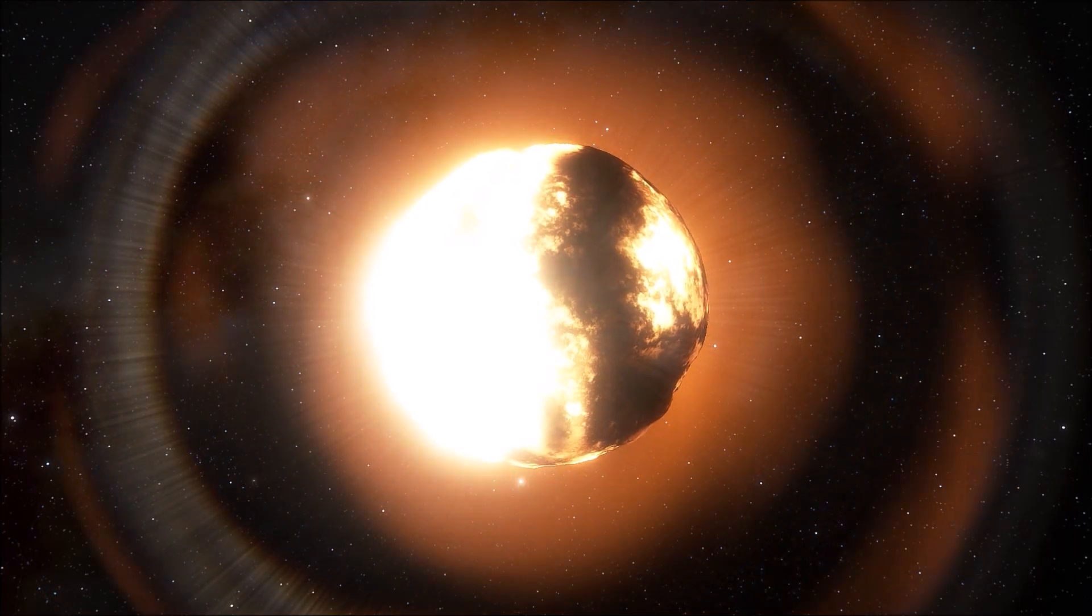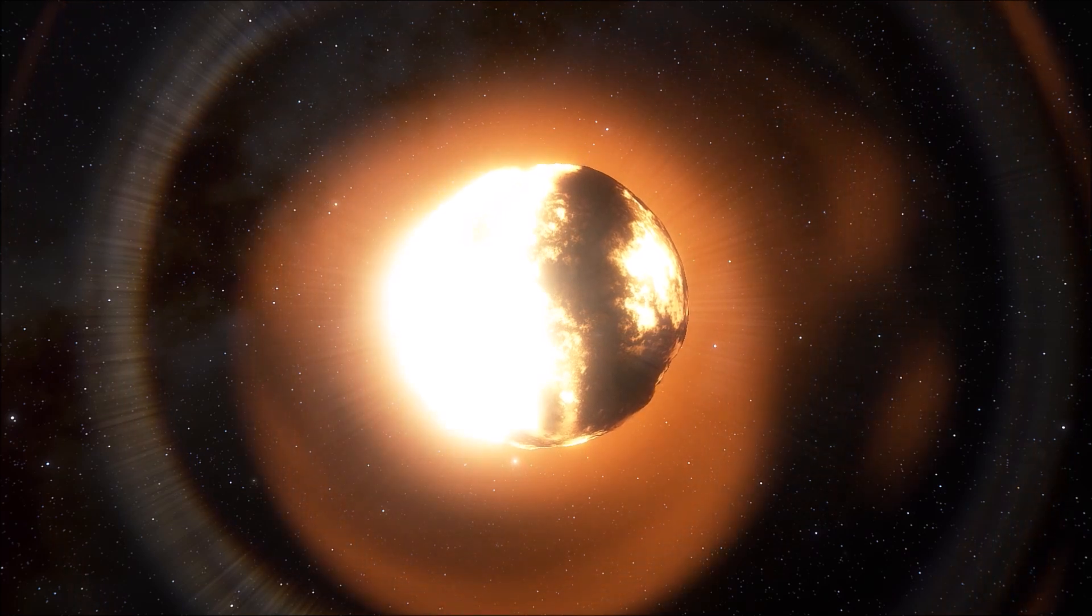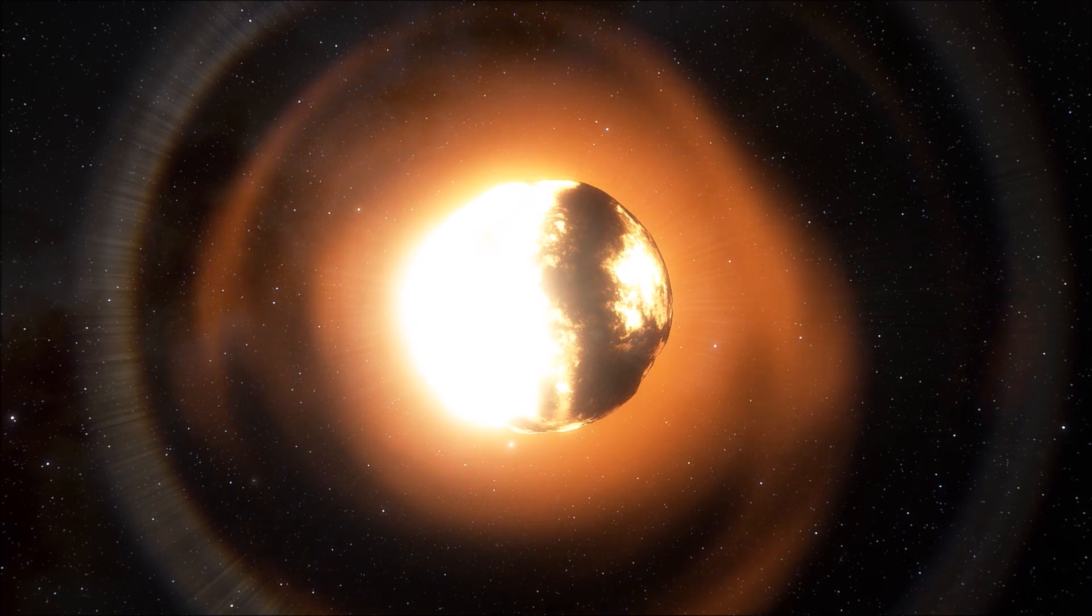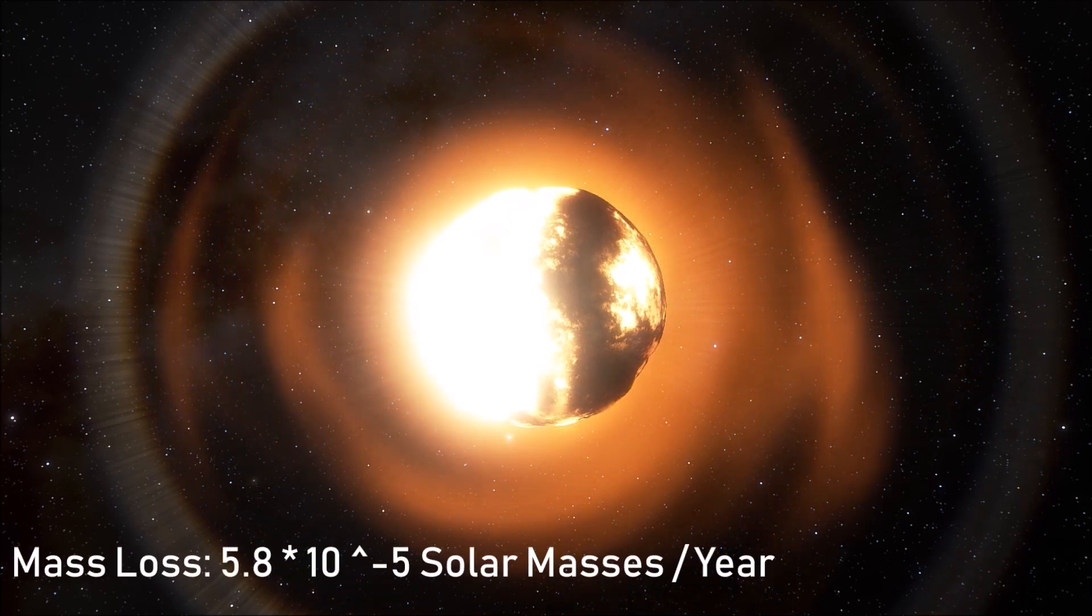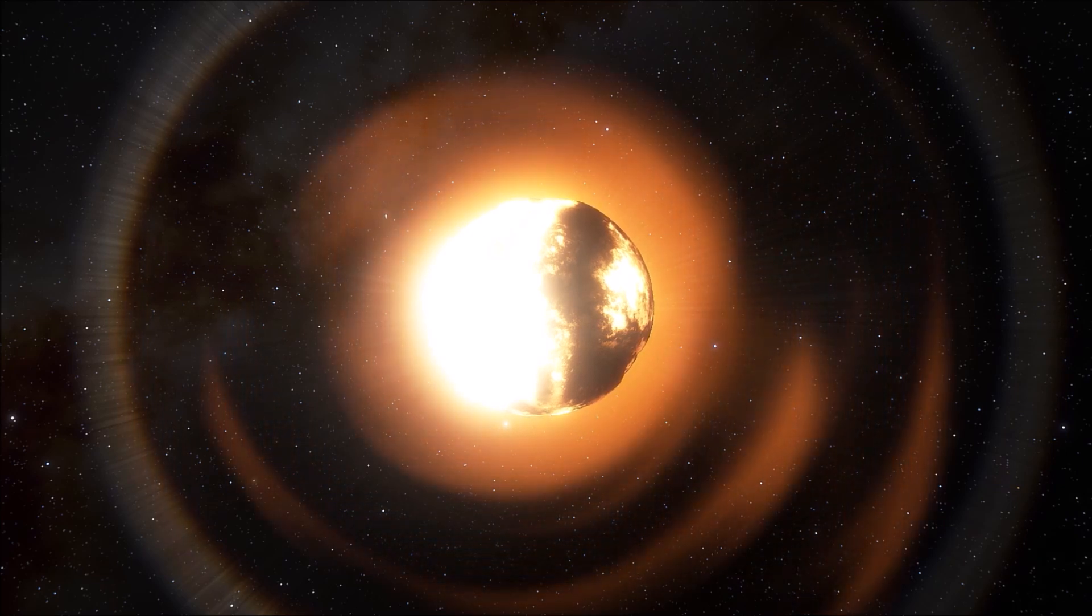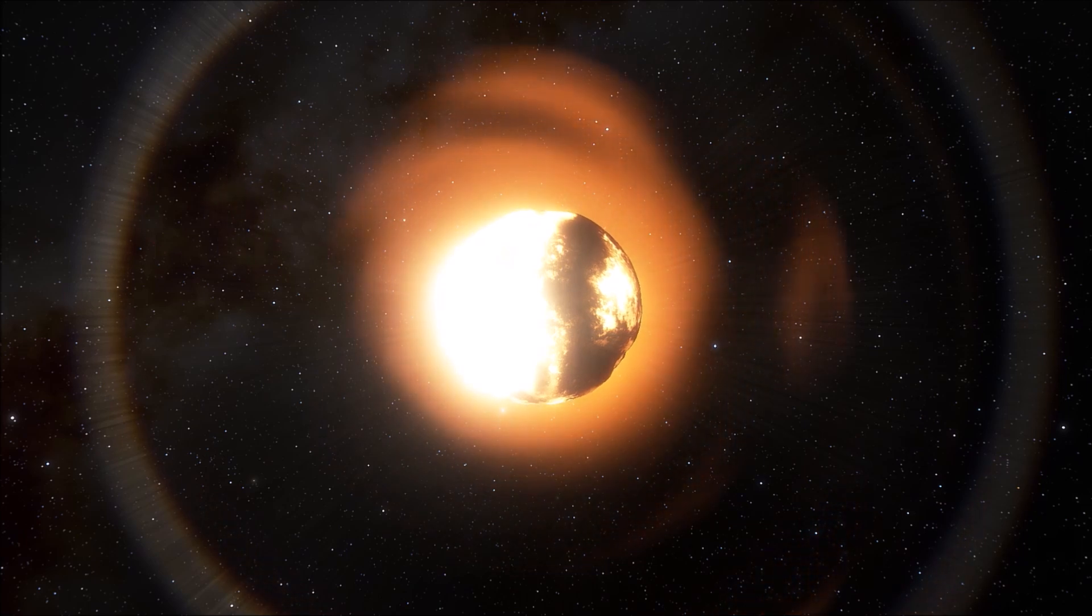While we can't estimate UY Scuti's mass very accurately, we know it appears to be ejecting a lot of its mass following the advent of the dying stage of its life. It is losing mass at a rate of about 5.8 times 10 to the negative 5 solar masses per year, so that's 0.000058 of a solar mass. This seems insignificant.